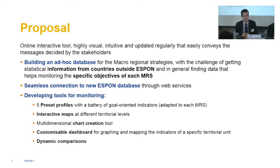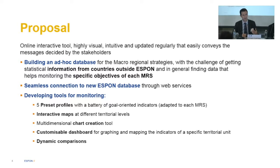For that we have to build a specific database for the four macro-regional strategies, because they are at a level of aggregation that does not exist in any current database — with the challenge of getting statistical information from countries outside ESPON space. Another challenge is finding data that helps monitor specific objectives of each macro-regional strategy, because sometimes defined indicators don't have data behind them to construct.